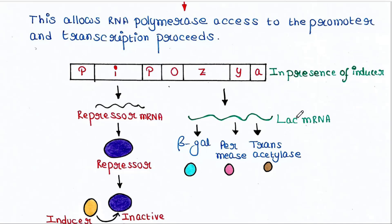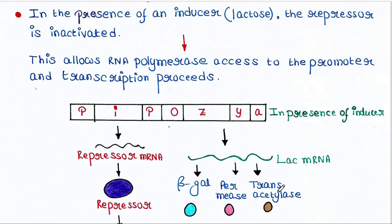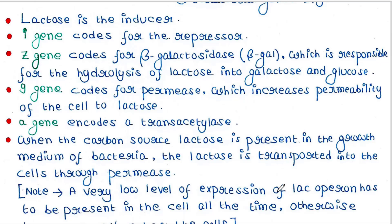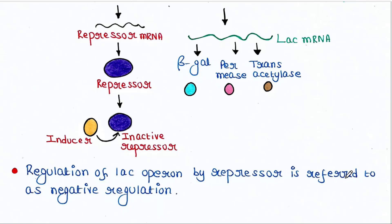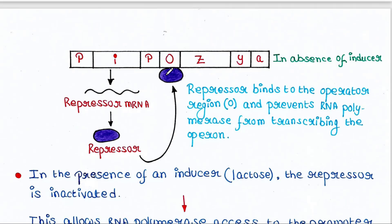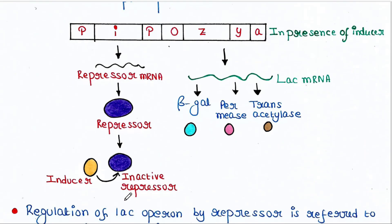The lac mRNA is produced, and after transcription, translation occurs: beta-gal from Z, permease from Y, and transacetylase from A are formed. These proteins carry out their respective functions — for example, beta-gal breaks down lactose into galactose and glucose. Regulation of the lac operon by the repressor is referred to as negative regulation, because the repressor protein is bound to the operon by default, shutting it off. This means the lac operon is off unless lactose, the inducer, is present. That's all for today's lecture — thank you for watching.